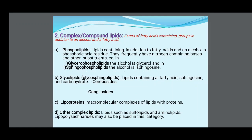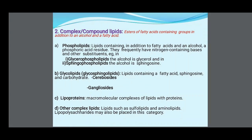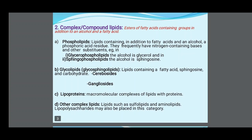Complex or Compound Lipids are esters of fatty acids containing groups in addition to an alcohol and fatty acids. Phospholipids contain phosphoric acid residue in addition to fatty acids and alcohol, and frequently have nitrogen-containing bases. Glycolipids (glycosphingolipids) contain a fatty acid, sphingosine, and carbohydrates — examples are cerebrosides and gangliosides. Lipoproteins are macromolecular complexes of lipids with protein. Other complex lipids include sulfolipids, aminolipids, and lipopolysaccharides.